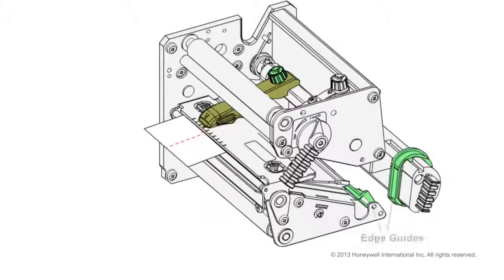Again, a small screwdriver may be helpful. Adjust the edge guides to the new media size and then replace the ribbon take-up core on the take-up hub.